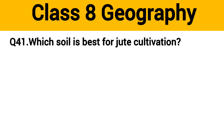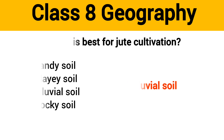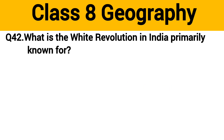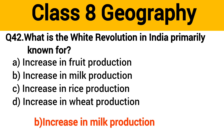Question number 41: Which soil is best for jute cultivation? The right answer is option C: alluvial soil. Question number 42: What is the White Revolution in India primarily known for? The right answer is option B: increase in milk production.